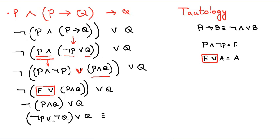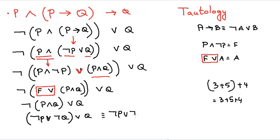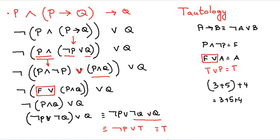Everything is OR, so we can drop the parenthesis and rearrange — just like addition: 3 plus 5 plus 4. That becomes NOT P OR NOT Q OR Q. Now NOT Q OR Q is always true. And NOT P OR true — anything OR'd with true is always true. So the whole expression is true. This combined proposition P AND (P implies Q) implies Q is what is called modus ponens, one of the fundamentals of logical reasoning.